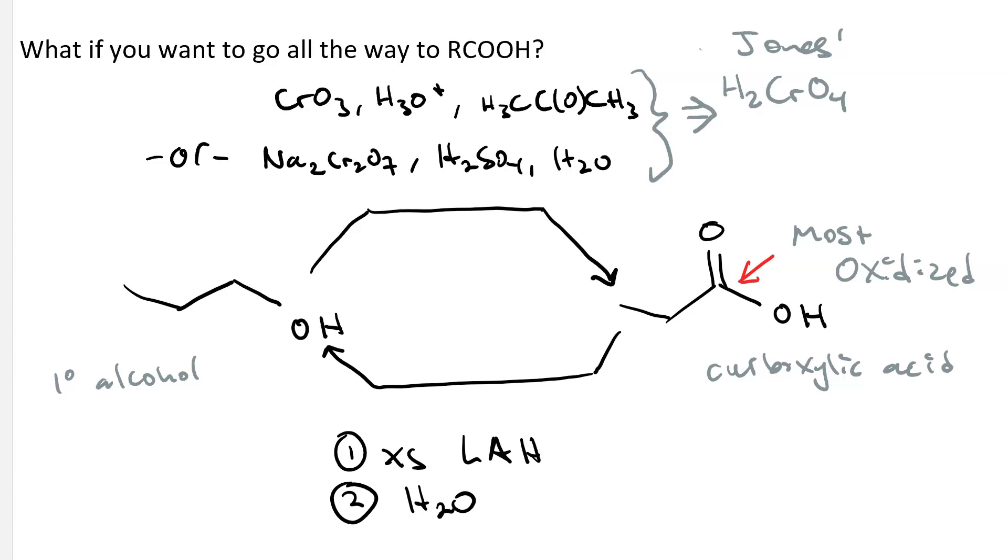Always keep in mind that this Jones reagent contains a chromium 6 ion, which is very toxic. So we want to avoid it if possible. But if we're trying to make a carboxylic acid out of a primary alcohol, this might be the easiest way.